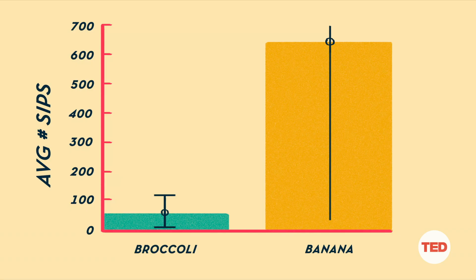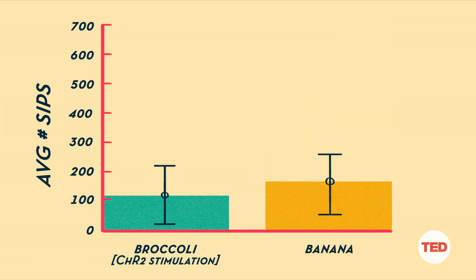So we saw that we were able to rescue broccoli and make it just as appealing as banana to our fruit flies. And we're able to replicate these same results in all of our experiments. So the question is, can we do the same thing in humans? Well, that depends on a number of items.